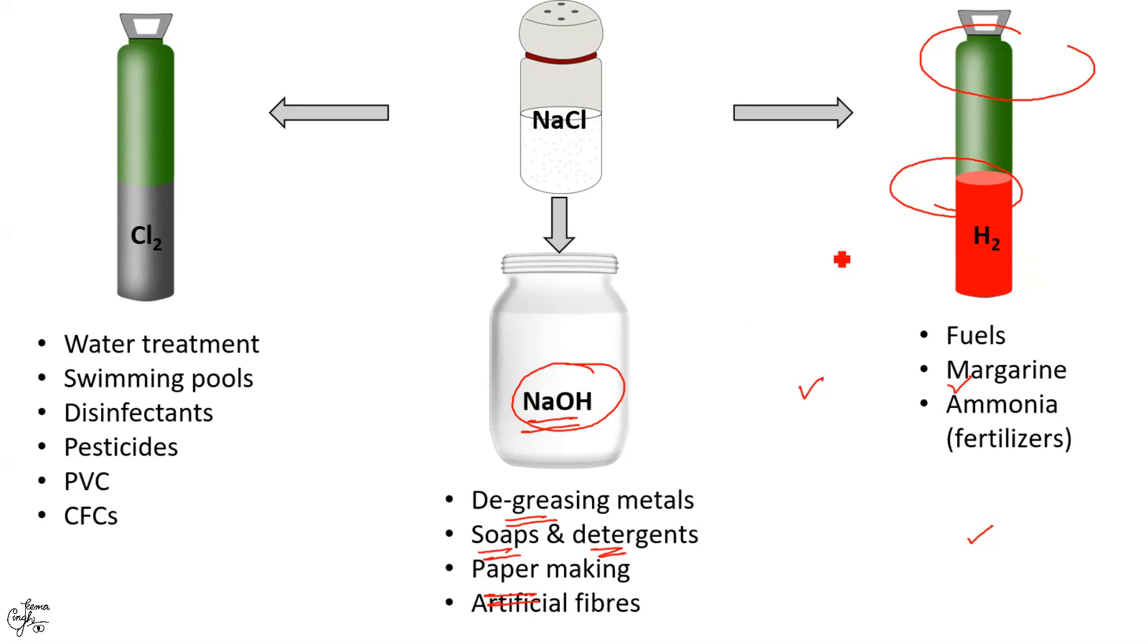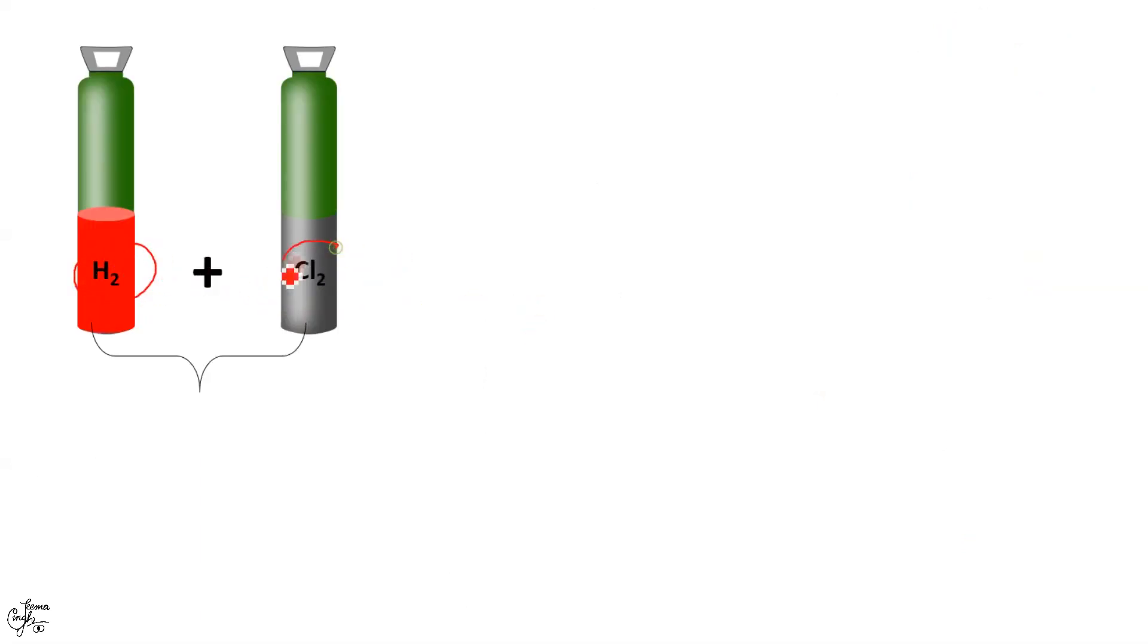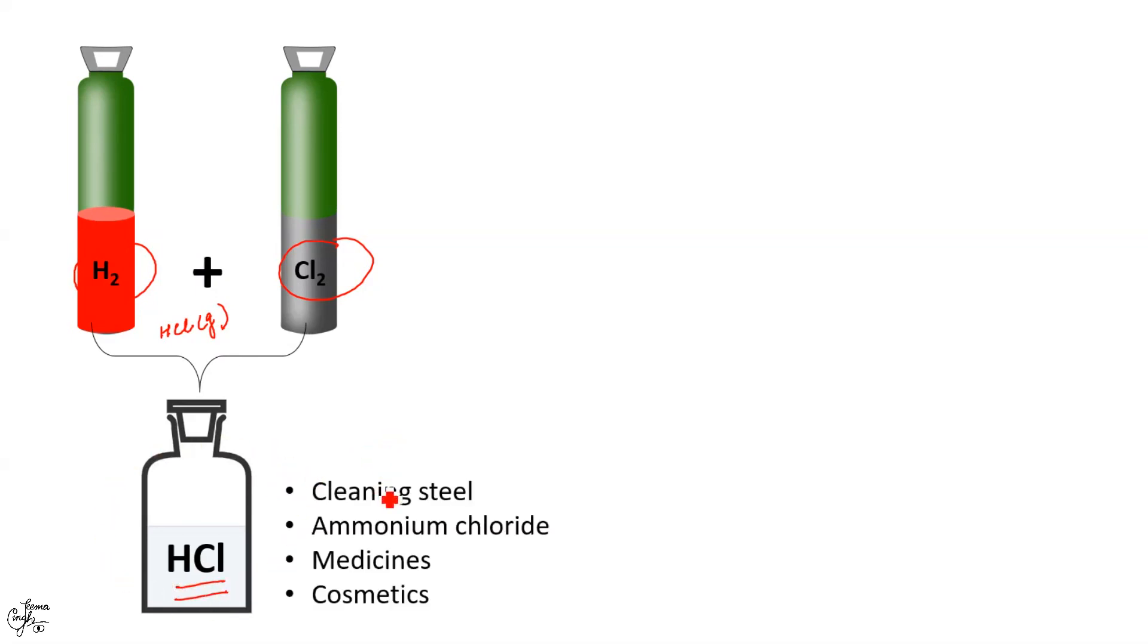These products can combine with each other to give other useful compounds. For example, the direct combination of hydrogen and chlorine gives hydrogen chloride gas which when passed to water gives hydrochloric acid. And this acid finds use in cleaning steel, in production of ammonium chloride, and for regulating pH in medicines and cosmetics.